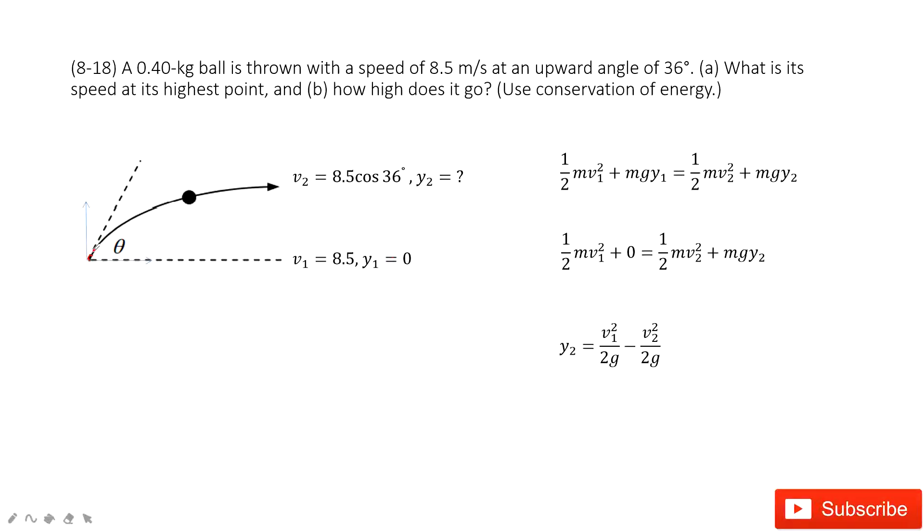And then this projectile motion when it reaches to the peak part, so the peak position. Now question: in projectile motion, at the peak position, is the velocity 0? No.